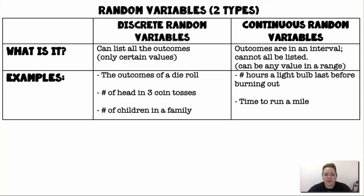Random variables have two types: discrete random variables and continuous random variables. In a discrete random variable we can list all the outcomes, so there are only certain values. Examples include rolling a die, the number of heads in three coin tosses, or the number of children in a family — no decimals, they're all whole numbers.